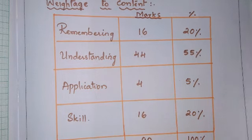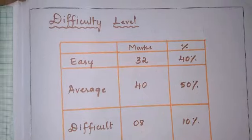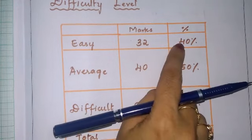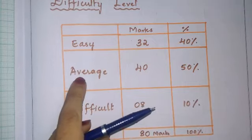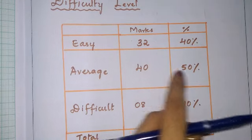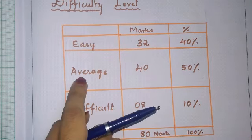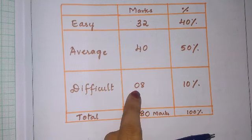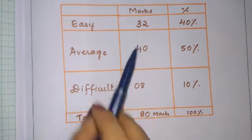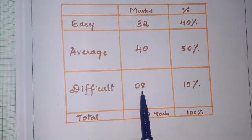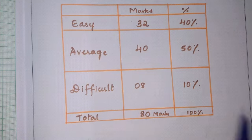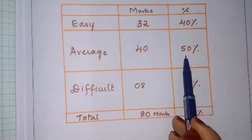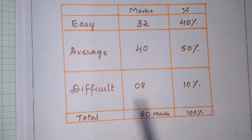Now let us see the difficulty level. Easy type questions will be 32 marks — 40 percent of the paper will be easy. Average questions are 40 marks — 50 percent of the paper will be average. Difficult questions will be 10 percent, that is 8 marks. Total: Easy 32, Average 40, Difficult 8 — making up 80 marks.